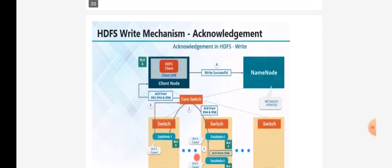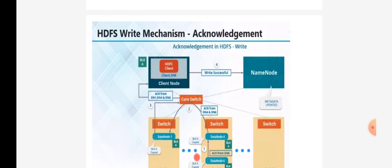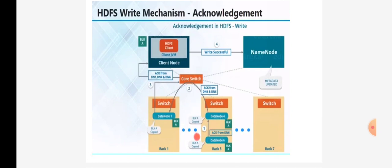The next important step is acknowledgement. If the information has been transmitted and we do not receive an acknowledgement, we cannot confirm that the data is properly transmitted. The solution is to provide acknowledgement at every step. As the client provides information to data node 1, data node 4, and data node 6, it asks for acknowledgement. Data node 6 will reply with an acknowledgement to data node 4, saying that it has written block A and copied the data with no issues.